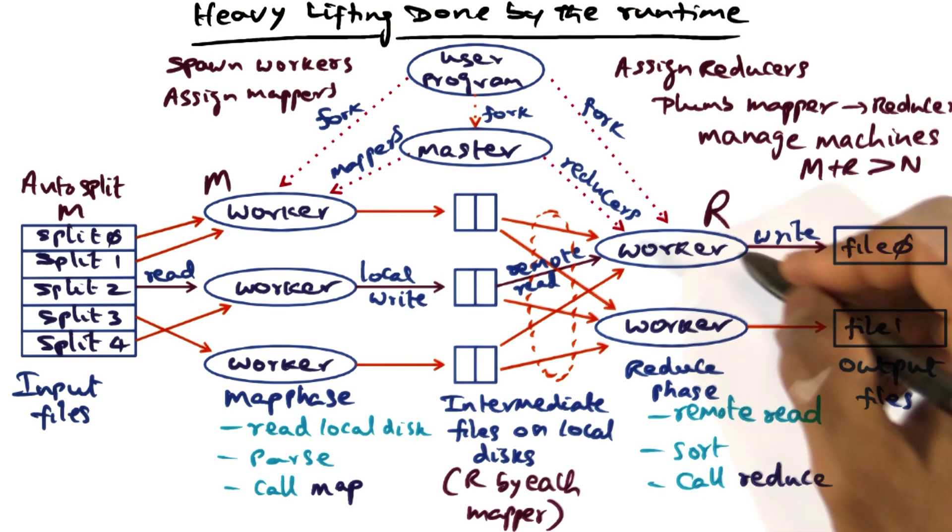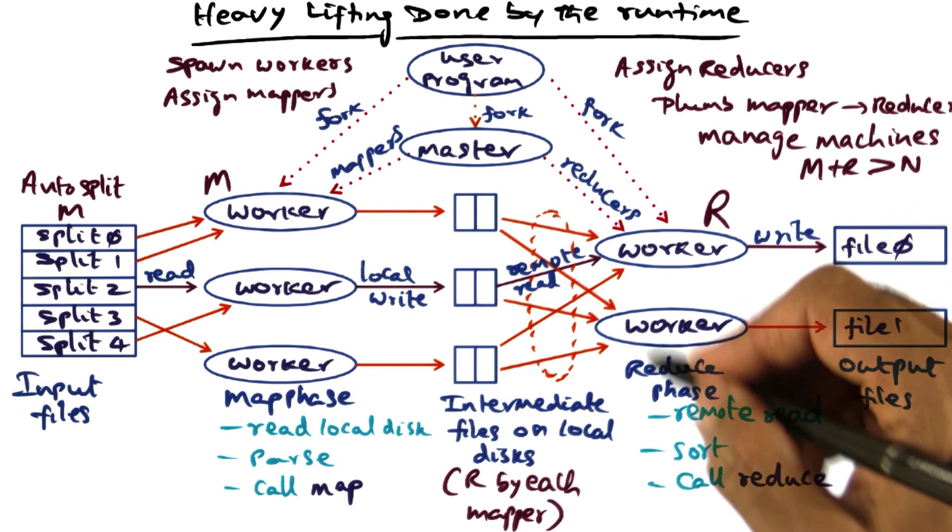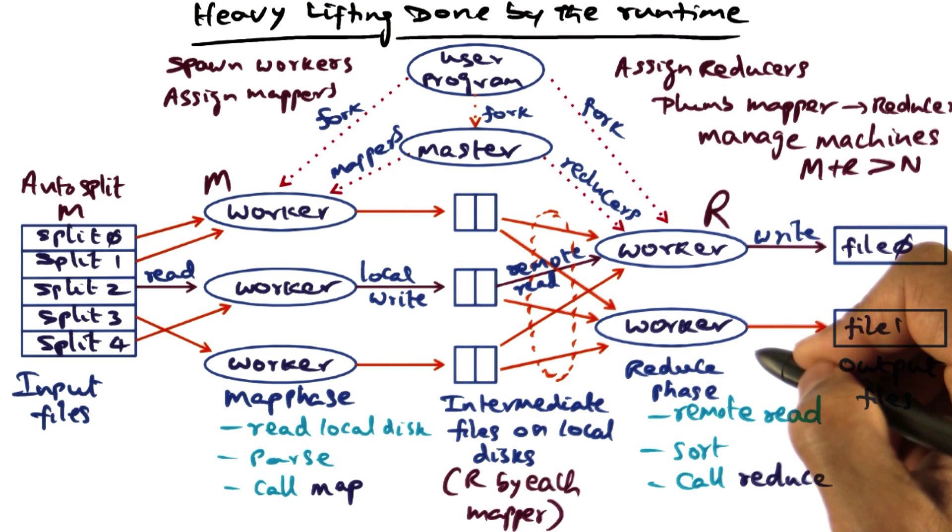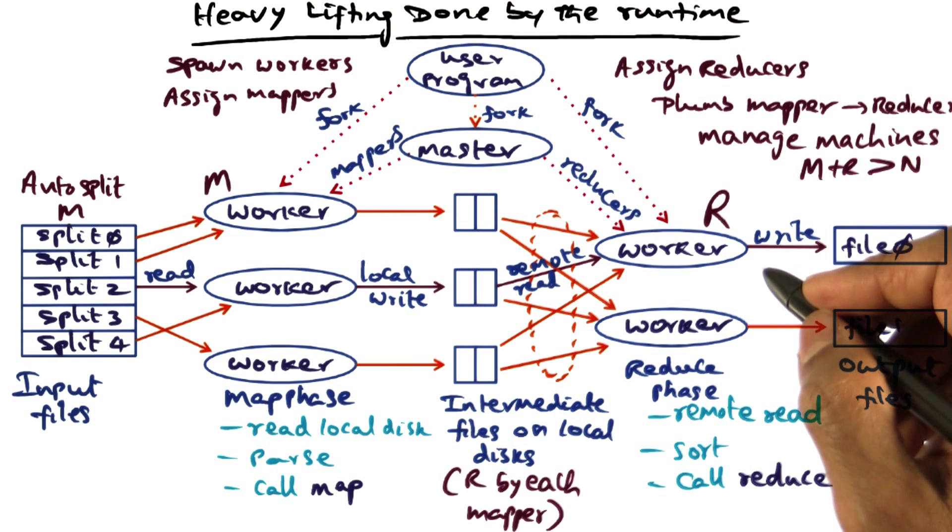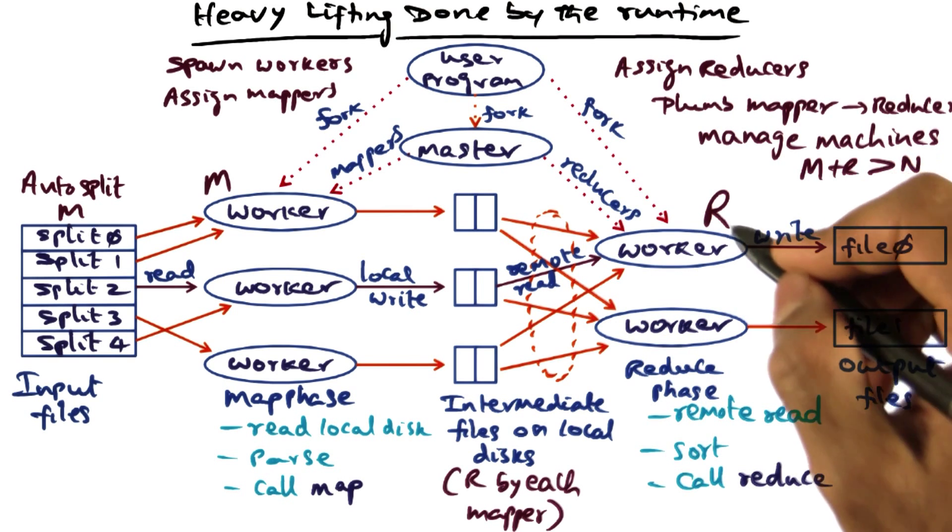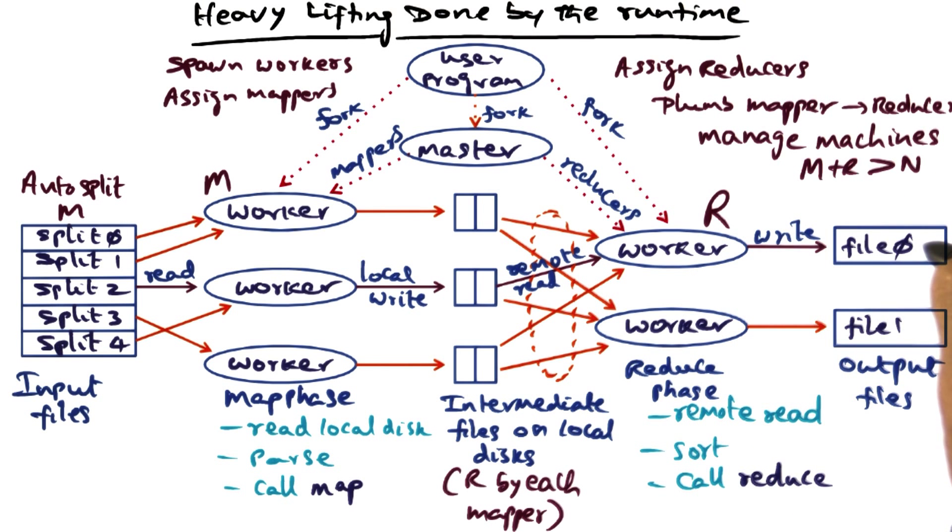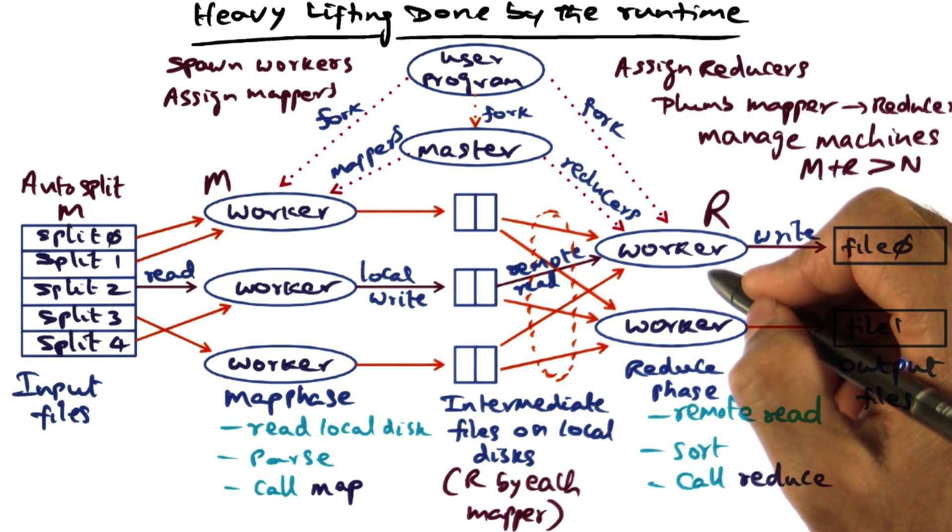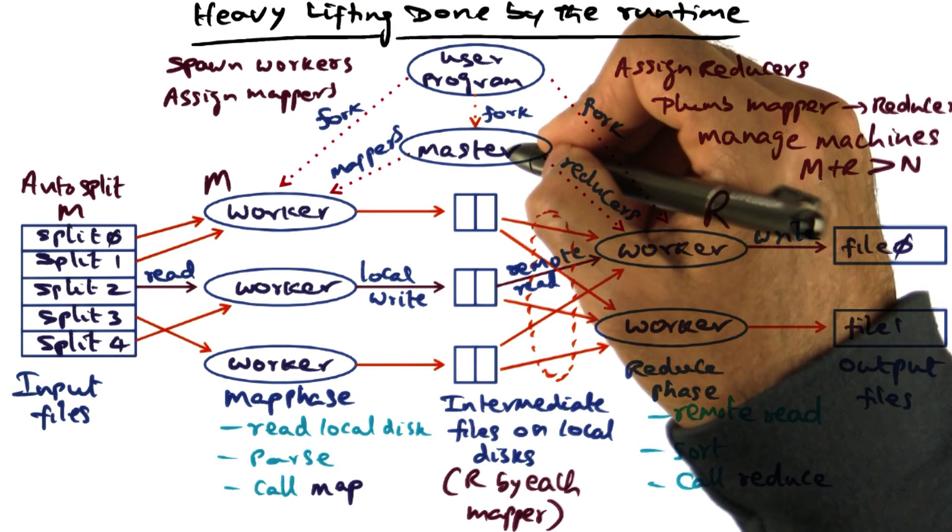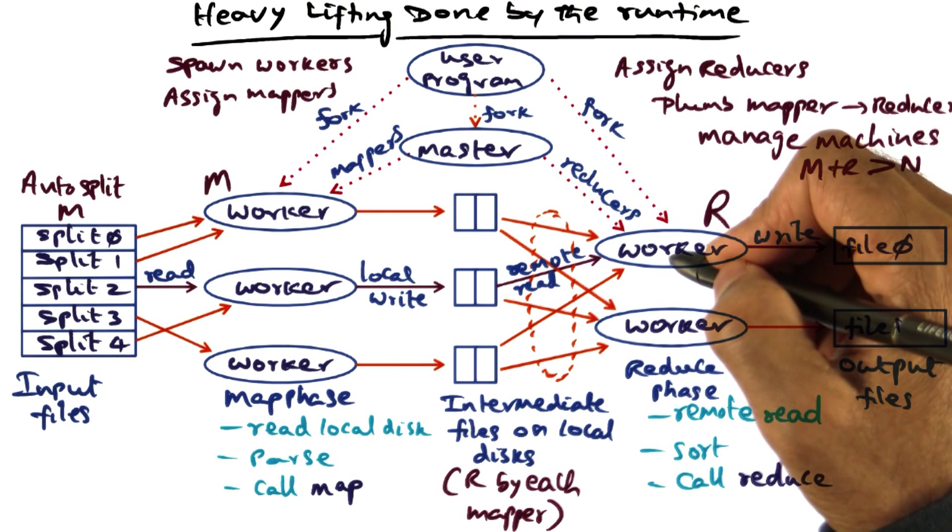And similarly, the number of R splits specified by the user may be more than the number of workers that are available to carry that out. And in that case again, the master is going to assign a particular split to this worker so that he can compute and generate the output file corresponding to that split. Once he's done with that and notifies the master, then the master will say, okay, now that you're done with that, work on the next split.